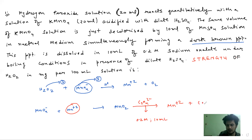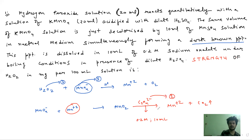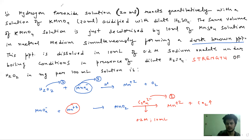Oxalate is oxidized to carbon dioxide. So we determine the n-factor of oxalate.